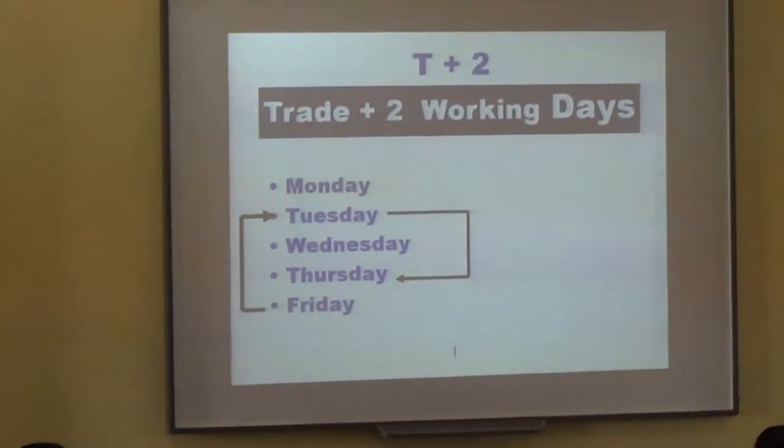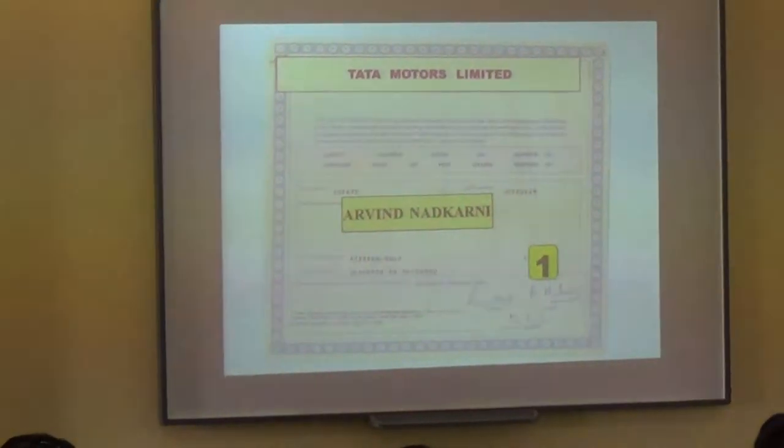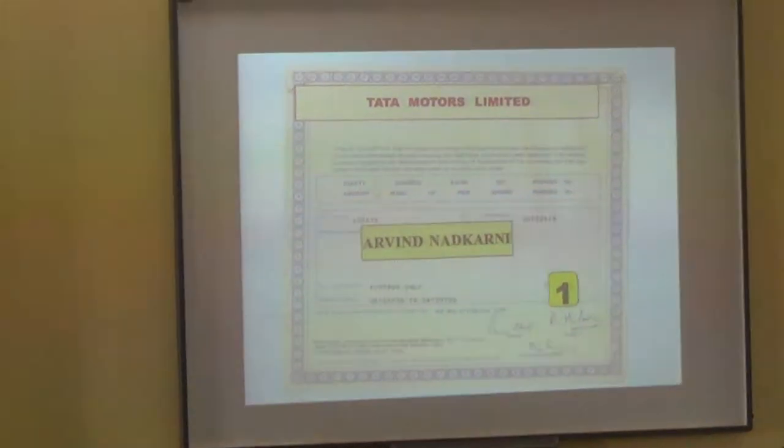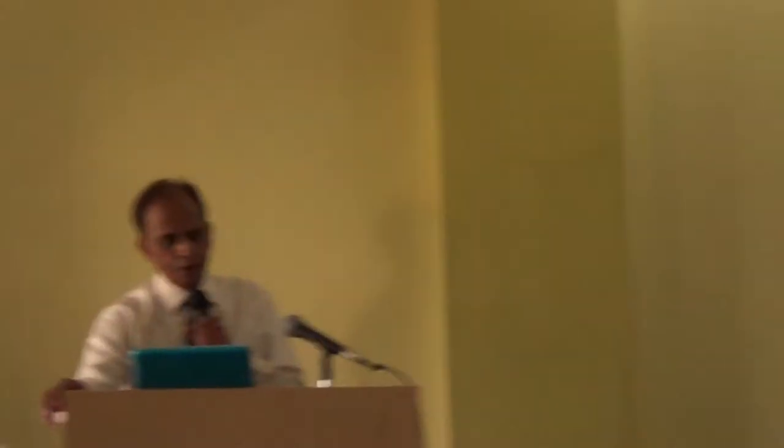Now, why was it T plus 30? Prior to 1996, demat came to this country only in the year 1996. Prior to that, people were holding shares in certificate form — physical share certificates. For example, if Mr. Arvind Narkadi was holding one share of Tata Motors and he sold me that share certificate, I would send that certificate to Tata Motors. Tata Motors would write my name on the share certificate and send it back to me. This process used to take one month, two months, even three months. That was the reason why it was T plus 30.